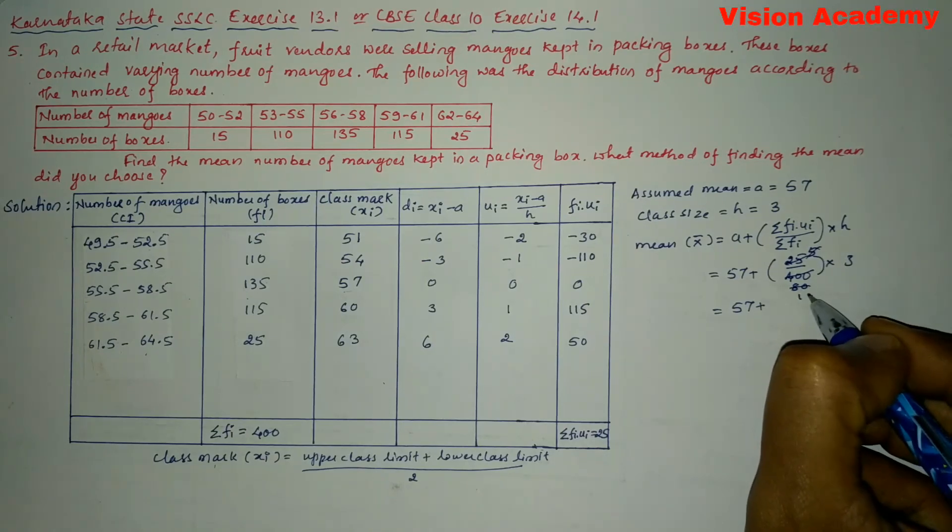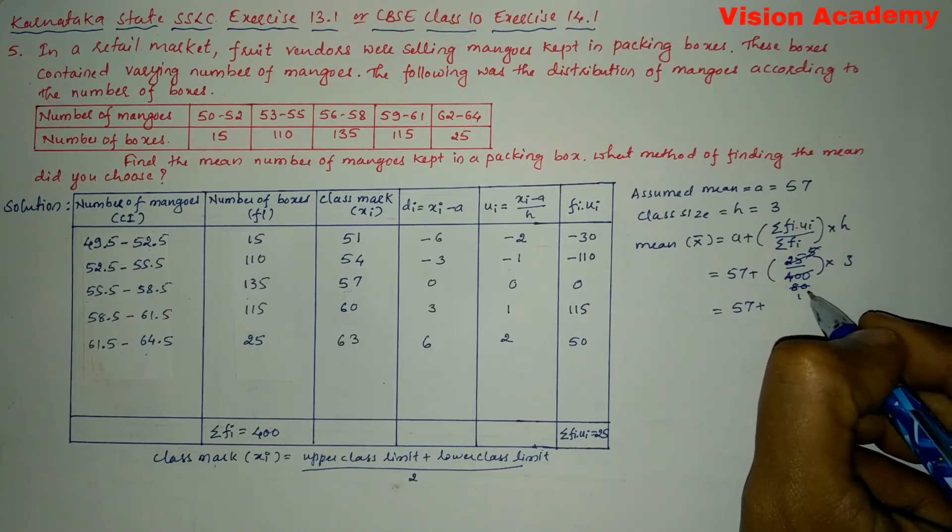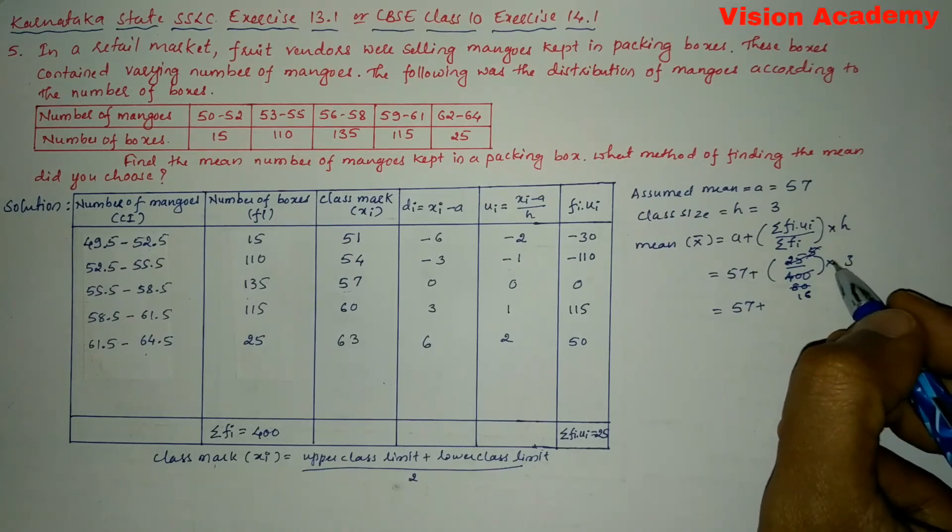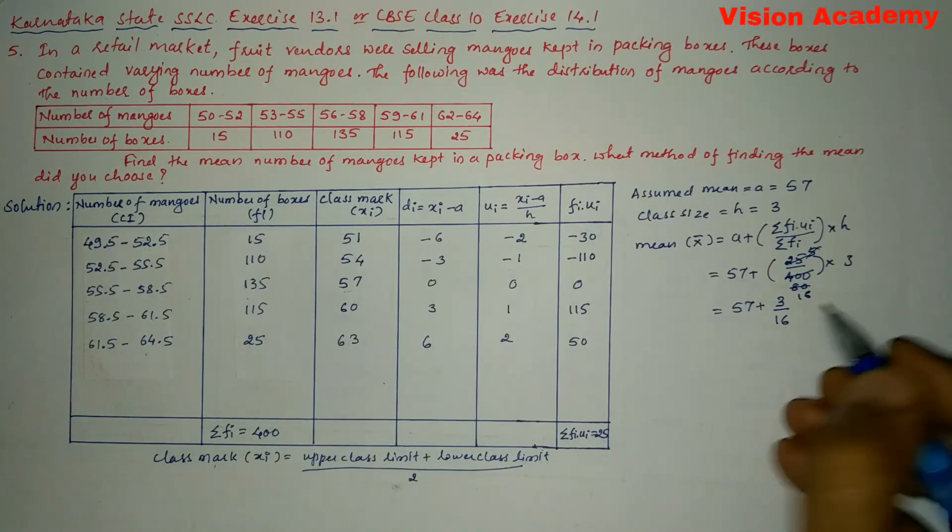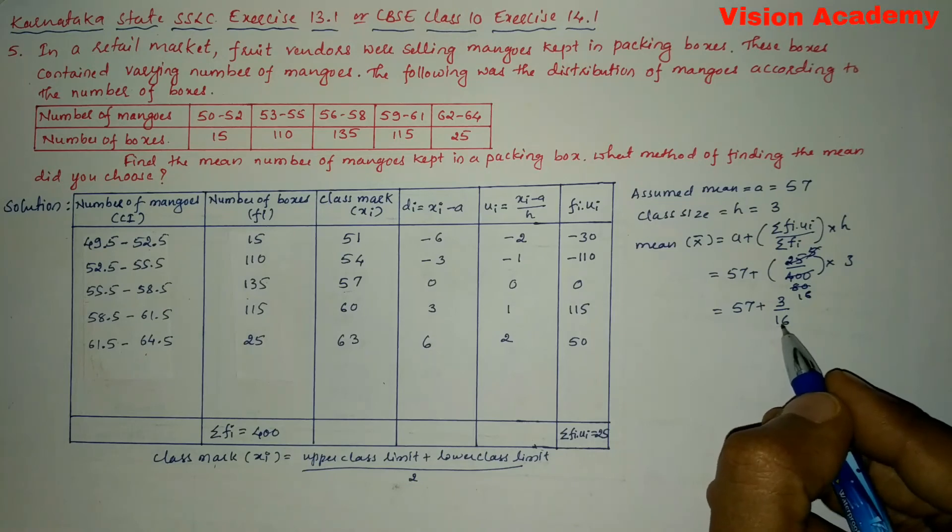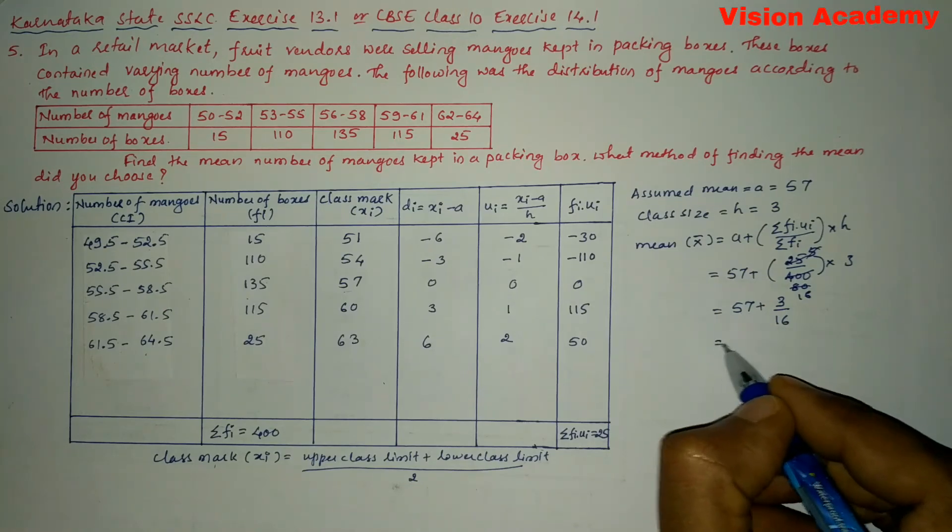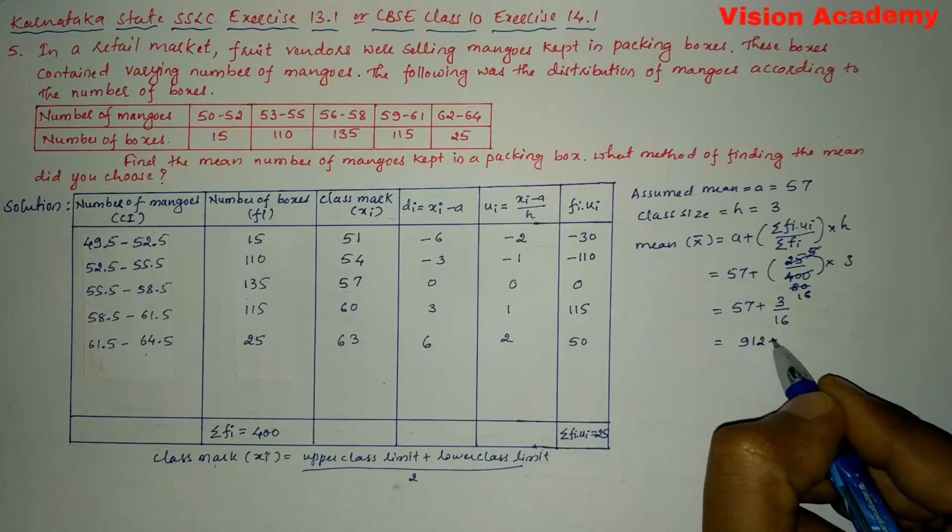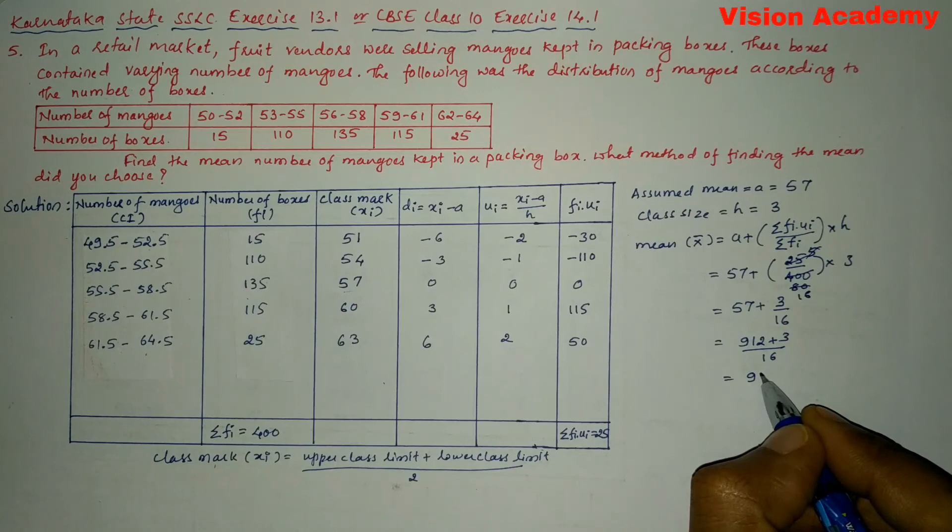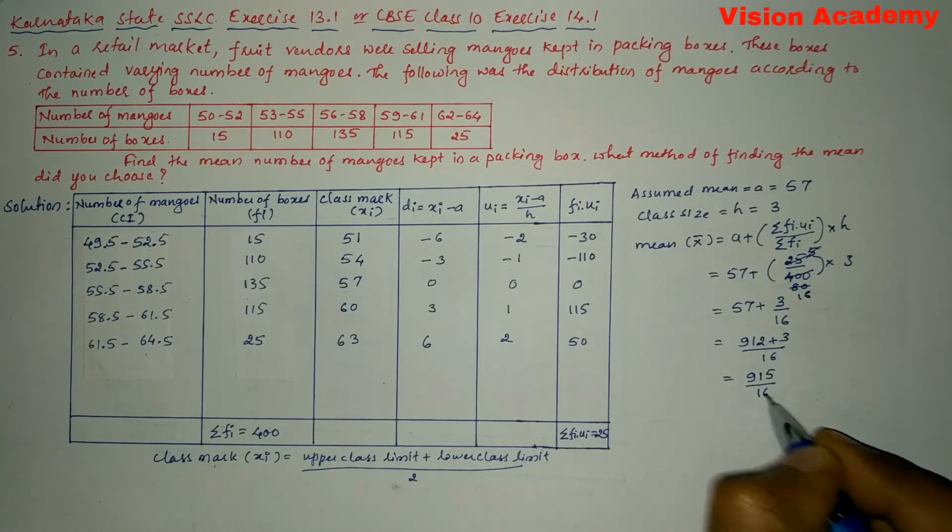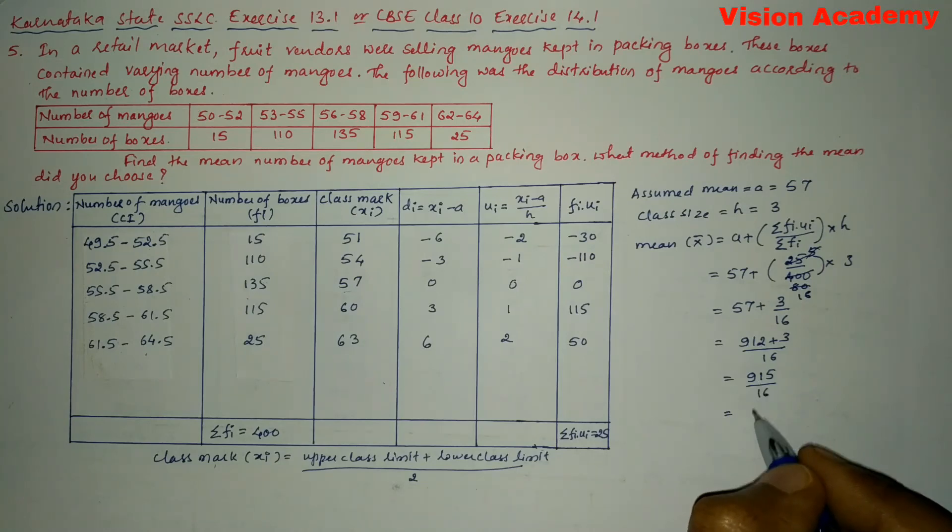So here 5 times 5 is 25, 5 times 8 is 40. So it is 3 divided by 16. So here we will write 3 divided by 16. Next let us take the LCM and multiply the 16 with 57. So this gives us 912 plus 3 whole divided by 16. So here 912 plus 3 is 915 divided by 16. So now after simplification we are going to get 57.18.